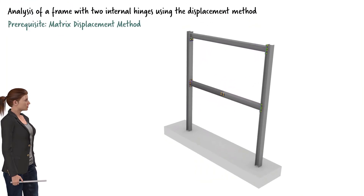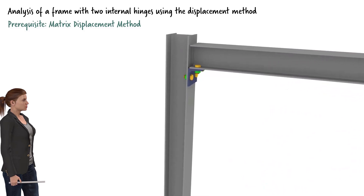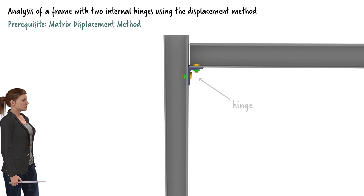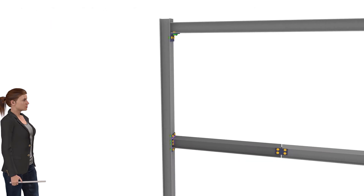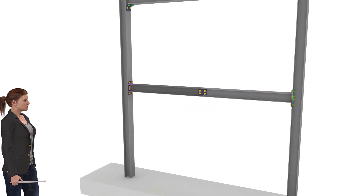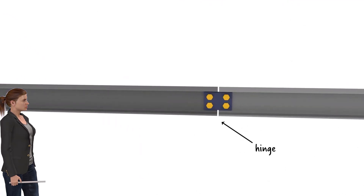There is a simple seated connection at the upper left corner of the frame. This connection allows the beam to rotate relative to the column; therefore, we treat it as an internal hinge. We also treat the splice at the midpoint of the lower beam as an internal hinge, as it allows relative rotation of the connected ends of the two beam segments.